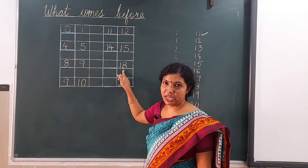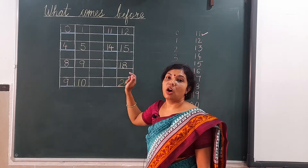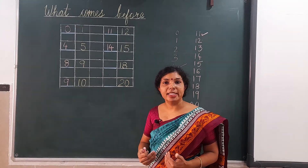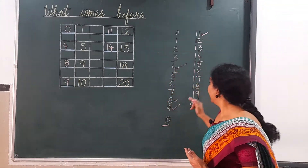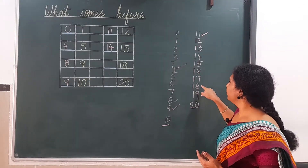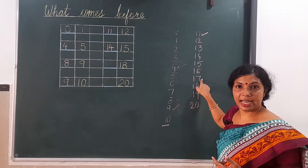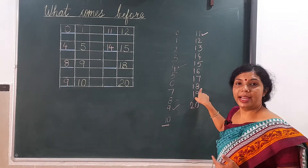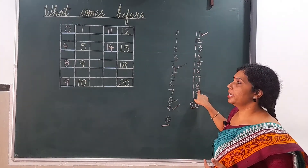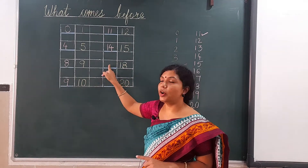Next it is 18. Now we have to search which number is coming before 18. We look at the number line and we can see that 17 is coming before 18. It means 17 comes before 18.